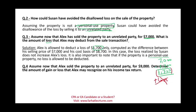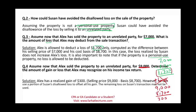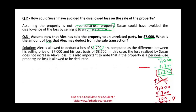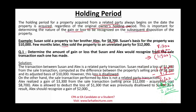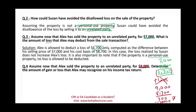Assume Alex sold the property to an unrelated party for $9,000. The selling price is $9,000 and Alex's adjusted basis is $8,700, giving a gain of $300. Susan has disallowed losses that can be used, but they are limited to offsetting the $300 gain — they cannot create additional losses for Alex. Of Susan's original $1,300 disallowed loss, $1,000 expires unused. Susan cannot use it, Alex cannot use it — it's basically gone.